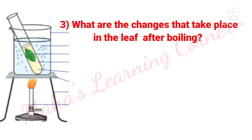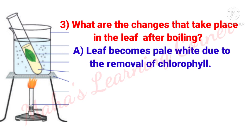What are the changes that take place in the leaf after boiling? Answer: Leaf becomes pale white due to the removal of chlorophyll.